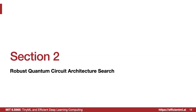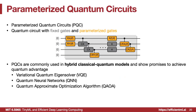Now we come to section two: robust quantum circuit architecture search. In previous lectures we already introduced the neural architecture search concept — for example, the one-shot network and ProxylessNAS. We have a similar problem in quantum neural nets: how can we design the architecture for the quantum circuit, especially for the parameterized quantum circuit? For the PQC, we have fixed gates in gray and parameterized gates in yellow. These two kinds of gates in PQCs are commonly used in hybrid classical-quantum models like VQE, quantum neural nets, and QAOA algorithms.